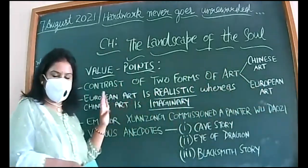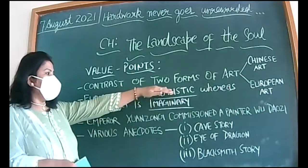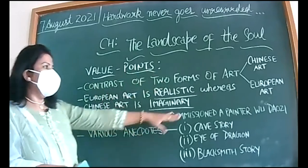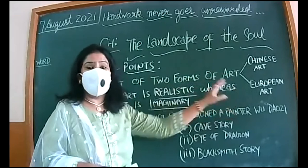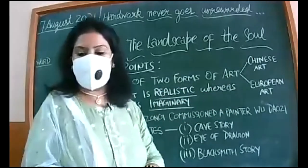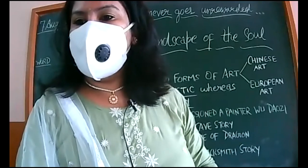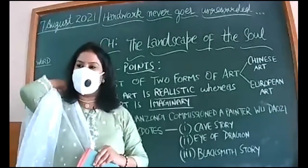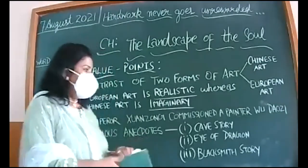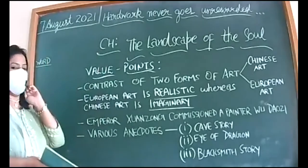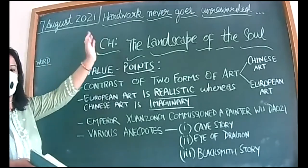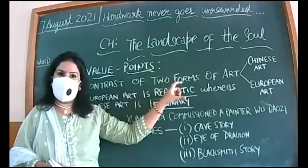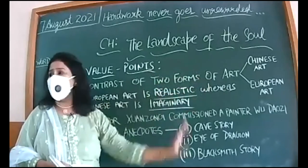After reading this, it is quite clear that we are going to read about Chinese art and European art and contrast them. Contrast means difference; comparison means similarities. The word 'landscape' actually comes from Chinese people, and this landscape form of painting emerged from China.